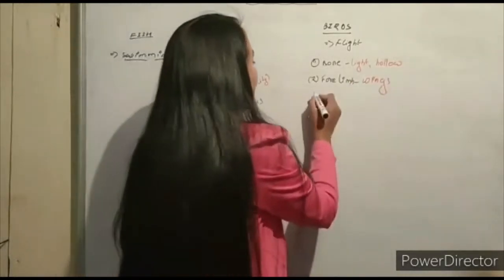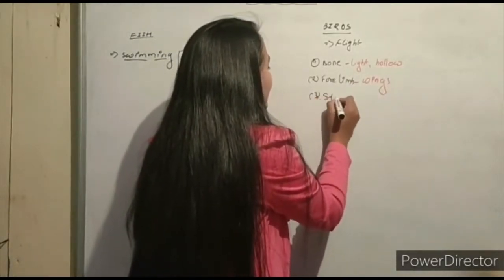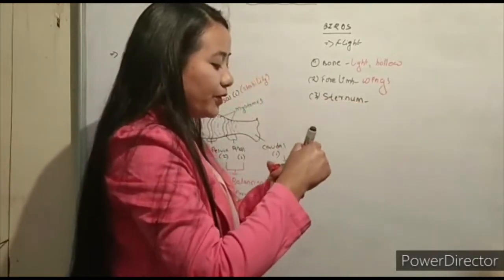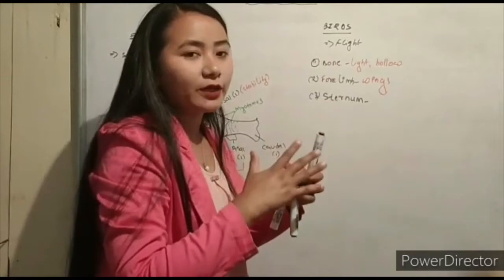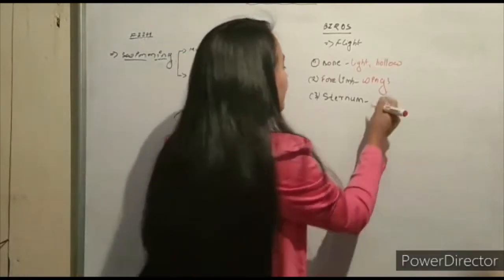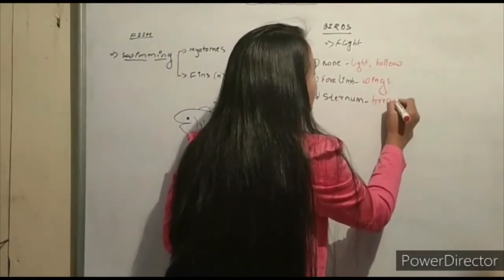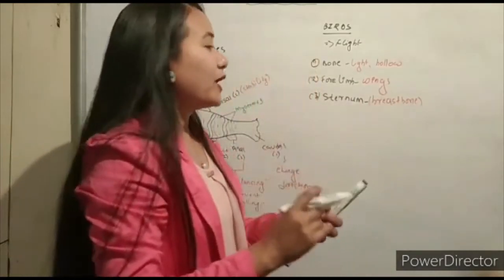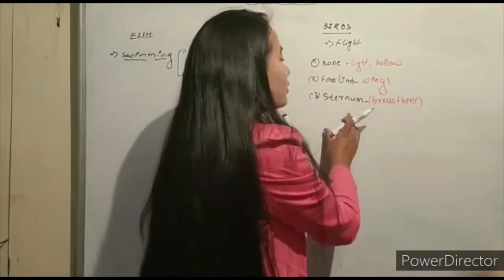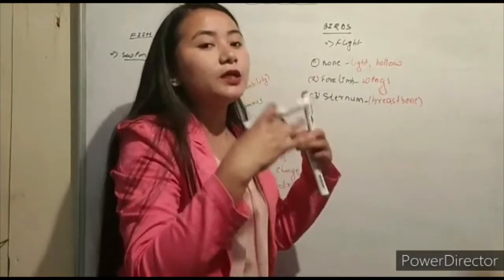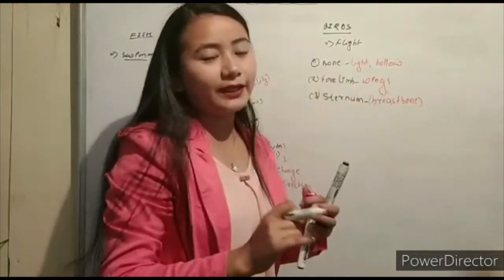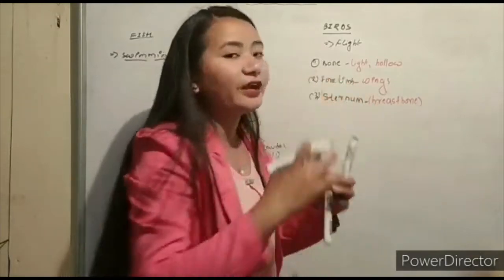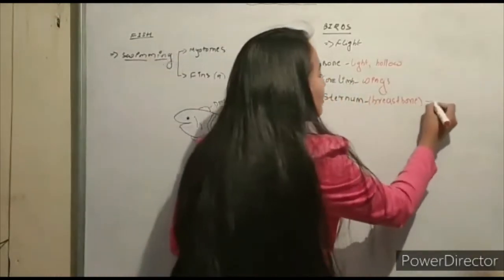The next structure is the sternum, which is the breast bone. In birds, the breast bone is enlarged. This enlarged sternum provides attachment for the powerful flight muscles.